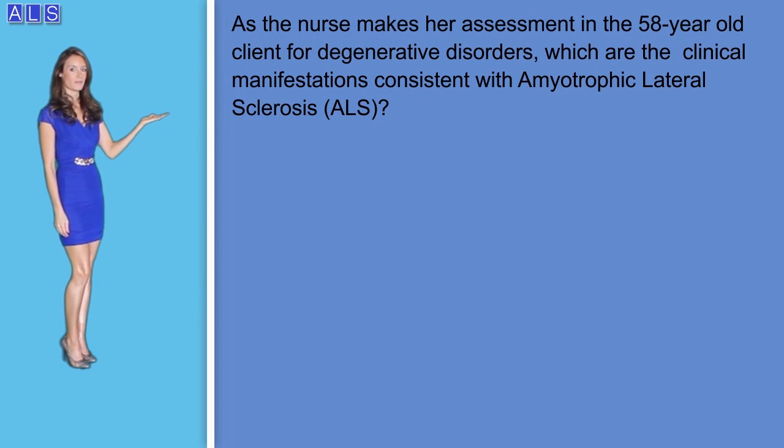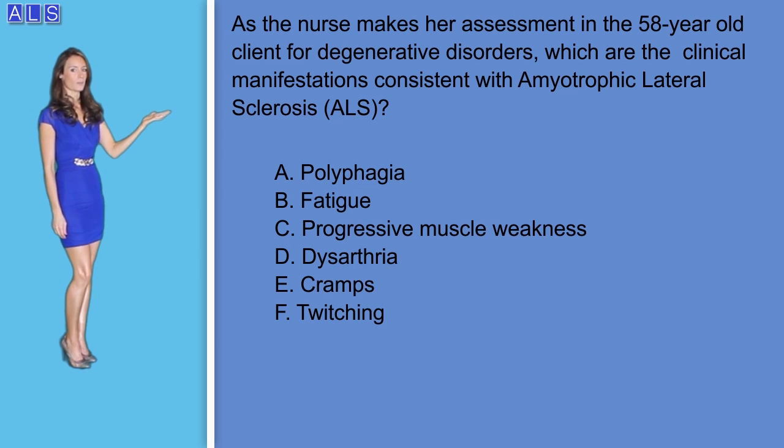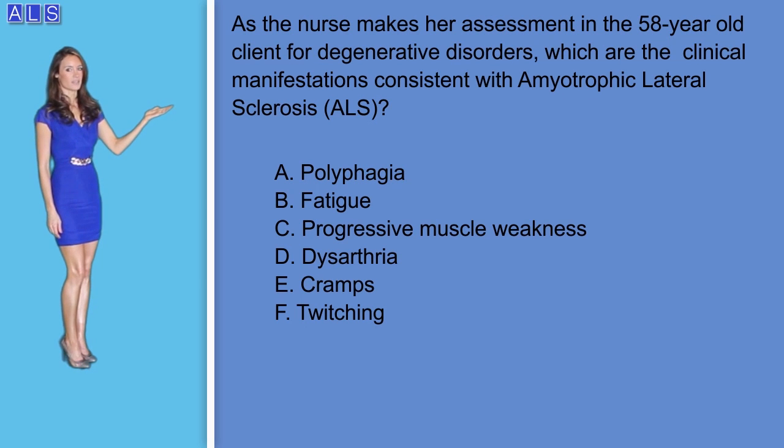Now let's go over some NCLEX-style questions to gain further understanding. Remember, in nursing school it is really important to do as many questions as possible because even if you understand all of the content, the questions can be confusing. Be sure to look below in the description section for more questions we prepared for you. Question number one: as the nurse makes her assessment with a 58-year-old client for degenerative disorders, which clinical manifestations are consistent with ALS? Select all that apply: A) polyphagia, B) fatigue, C) progressive muscle weakness, D) dysarthria, E) cramps, F) twitching.